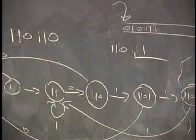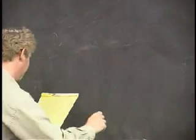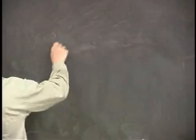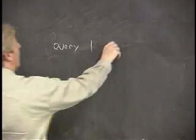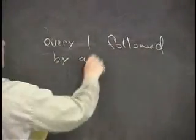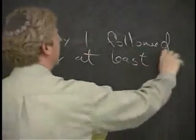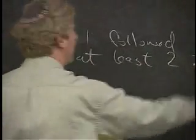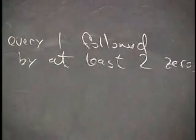I'm going to do one more of these. Well, two more. Here's a quick one. Every one is followed by at least two zeros. Binary strings again. Every one is followed by at least two zeros.